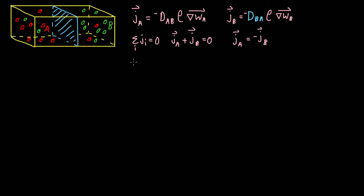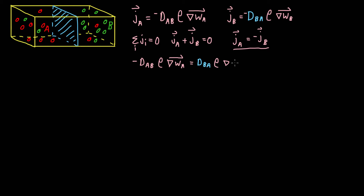Writing this out in terms of Fick's law of diffusion, we have negative the diffusion coefficient D_AB times the density multiplied by the gradient of the mass fraction of A. This is then equal to the diffusion coefficient D_BA multiplied by the density of the system multiplied by the gradient of the mass fraction of species B — the negative cancels because we're taking the negative of this expression.